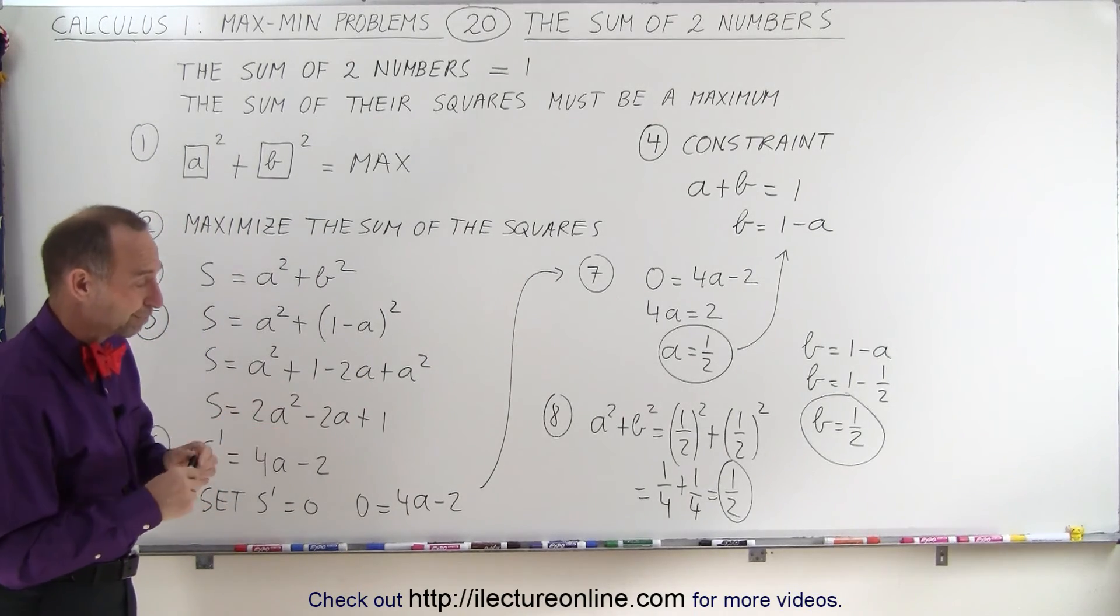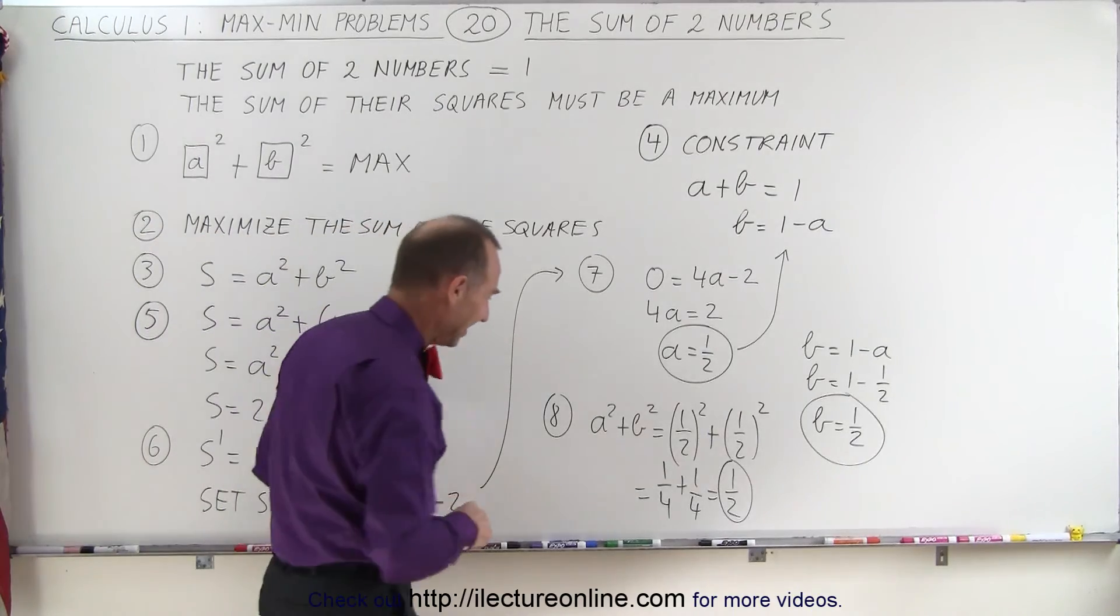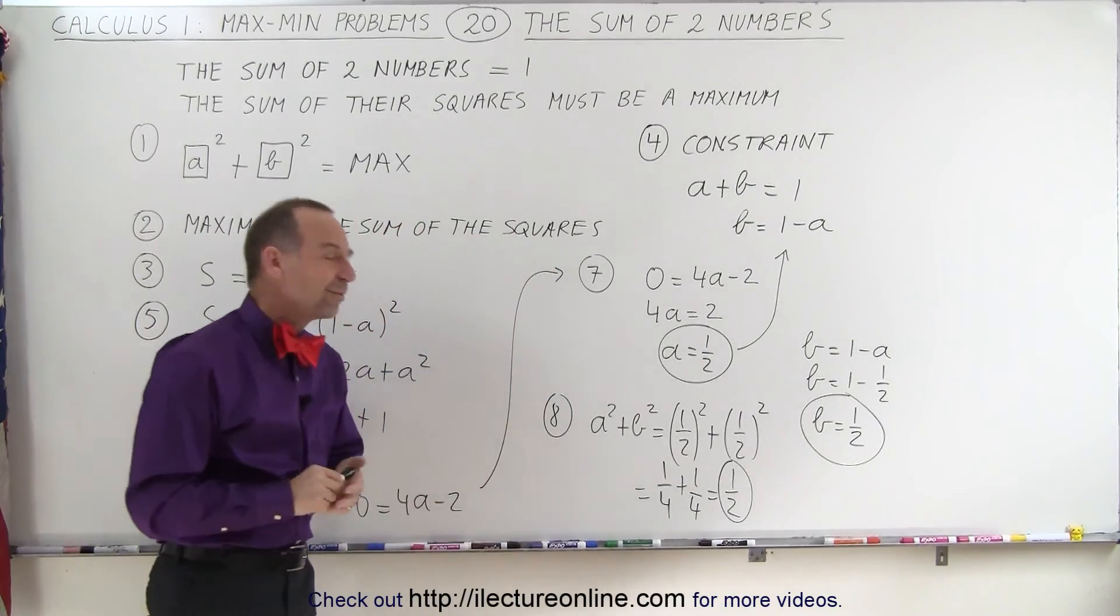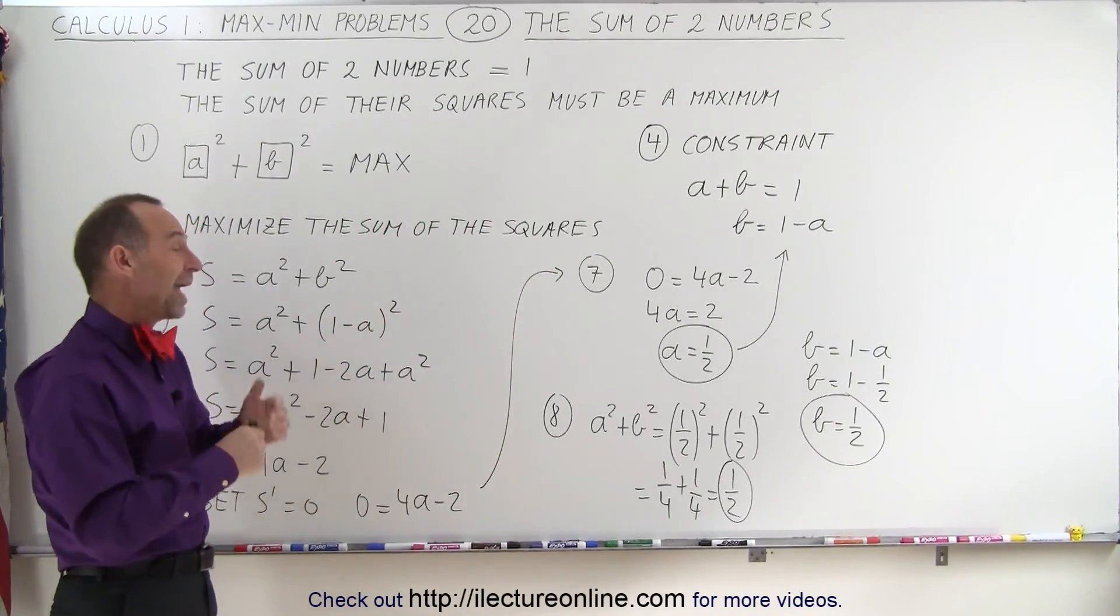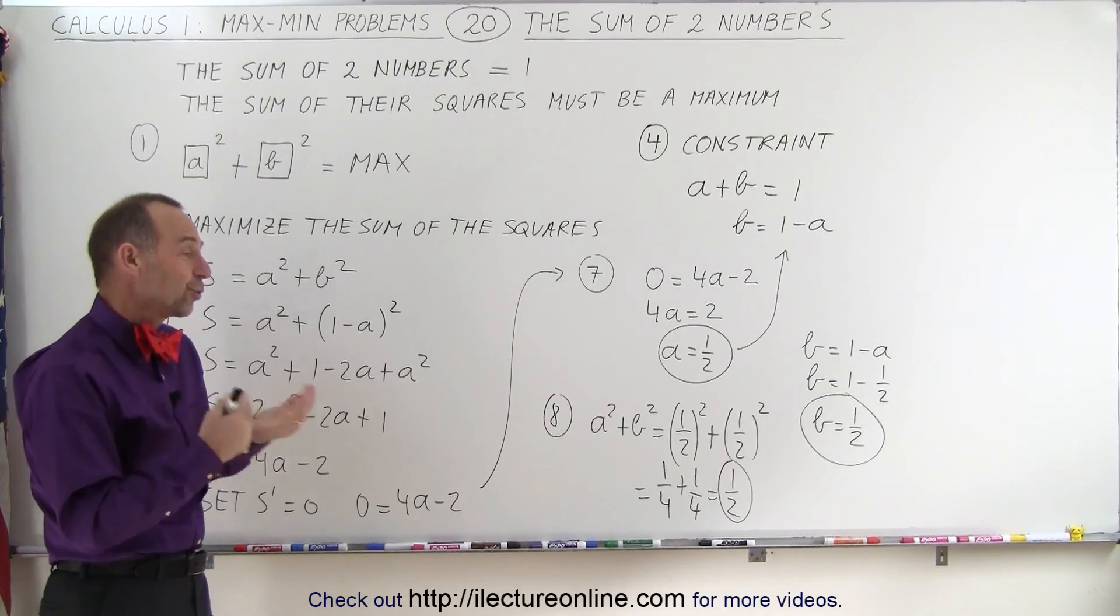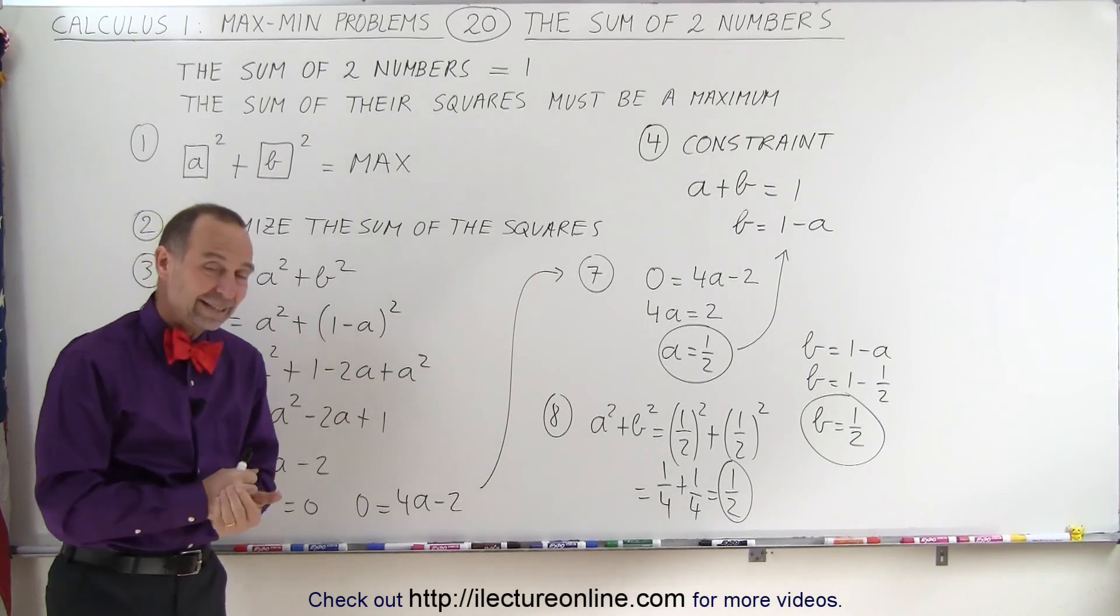And that's the maximum value two numbers can have when you add them together to get 1, and when you square them, the maximum value you can get is 1 half.